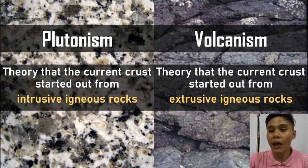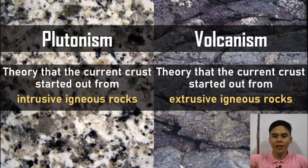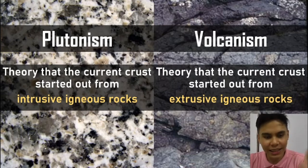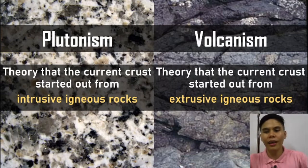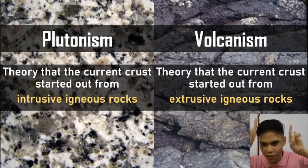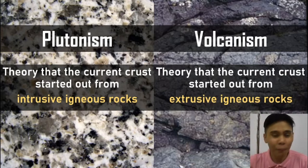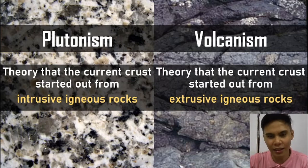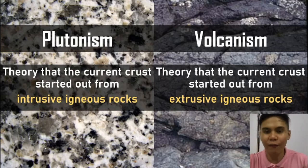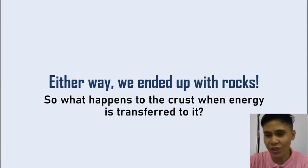Volcanism, on the other hand, says the current crust started out from extrusive igneous rocks — meaning volcanoes just spewing lava out, and then that lava solidified. That's the initial crust. These are two theories still in debate, but mostly people believe in volcanism because it's more intuitive — volcanoes spew out lava and that's it. Plutonism says there's a temporary shell first, then it got subducted, and the underneath shell is the one that formed the new crust. It's complicated. Either way, we ended up with rocks in the crust.